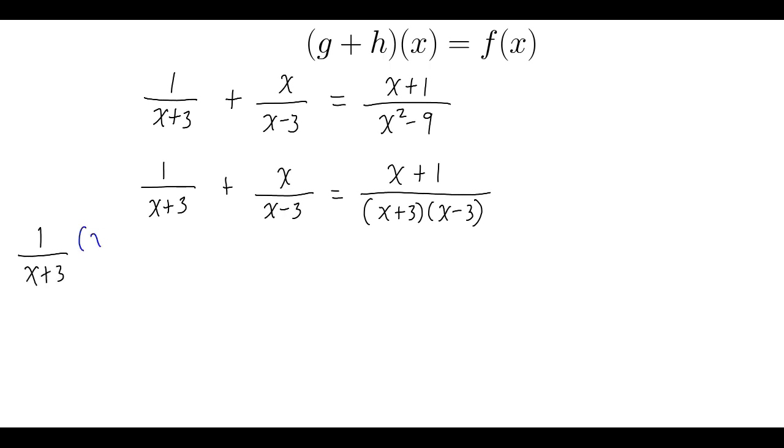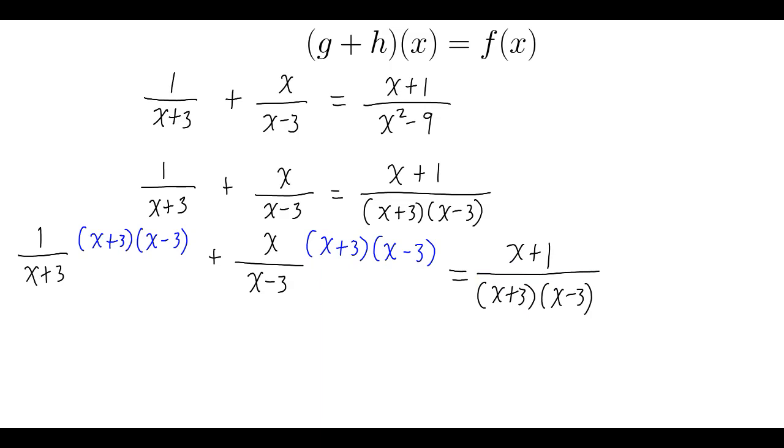So multiply this one by x plus 3 times x minus 3, plus x over x minus 3 times x plus 3 times x minus 3, equals x plus 1 over x plus 3 times x minus 3 times x plus 3 times x minus 3.